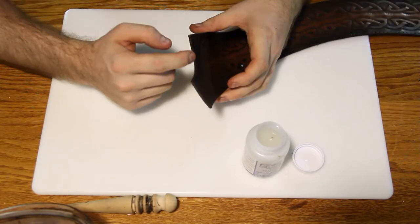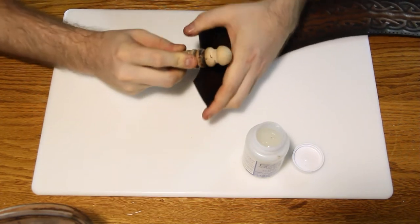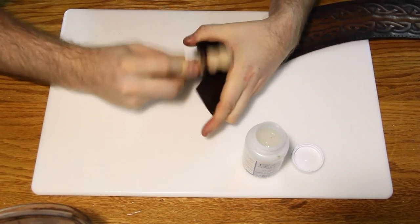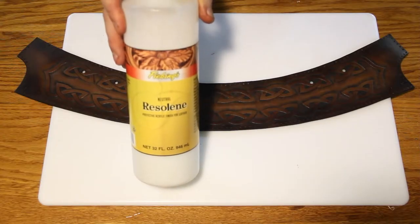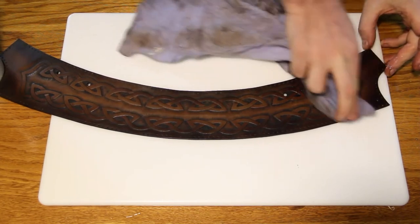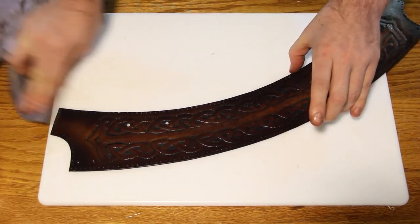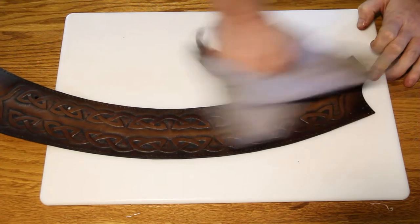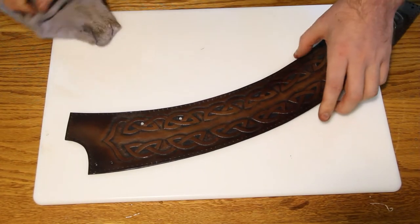To finish off the edges I'm using some gum tack. Just apply some to the edges and then burnish it down. For the top coat I'm using Resoline. I'm applying it with a damp cloth, letting it dry for about 10 minutes, and then buff it to a shine.